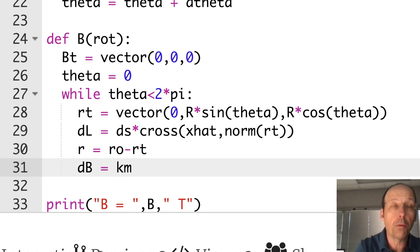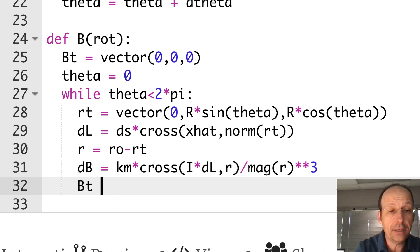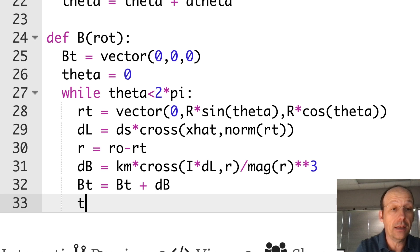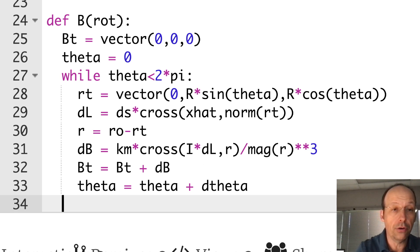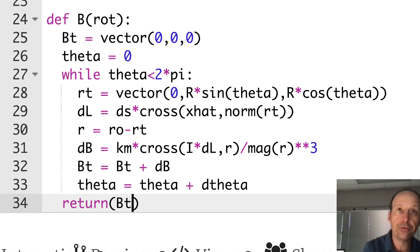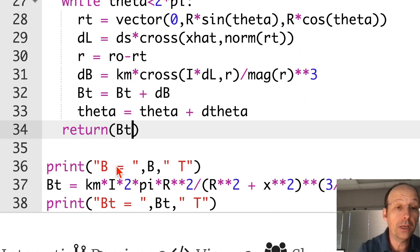I can then calculate the magnetic field due to that piece. DB equals mu not over 4 pi, which is Km, times the cross product of DL and R divided by the magnitude of R cubed. Oh, it should be IDL. I times DL and R divided by the magnitude of R cubed. Then I'm going to add that to the total. BT equals BT plus DB. And then I need to increase my theta. Theta equals theta plus D theta. That will go around the whole loop. And then when I'm done with that, I'm going to return the value BT.